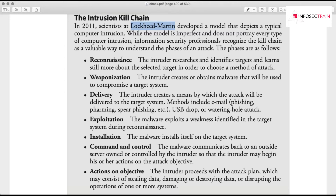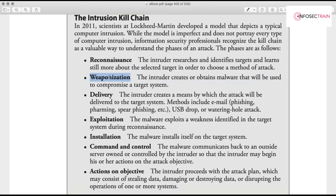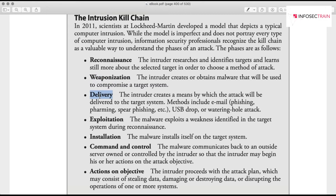The kill chain starts with reconnaissance — gaining basic information about the target, such as what systems a bank uses or where its data centers are. Next is weaponization — creating malware to compromise the target system. Then comes delivery — getting that weapon to the system, perhaps via email phishing or a USB drive.